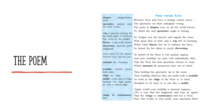Let us read the poem. First stanza: 'Between nose and eyes, a strange contest arose. The spectacles set them unhappily wrong. The point in dispute was, as all the world knows, to which the said spectacles ought to belong.' This stanza clearly states there was a dispute — a disagreement — over the spectacles, and the world knew about it. Both the nose and the eyes wanted to know who the spectacles actually belong to.